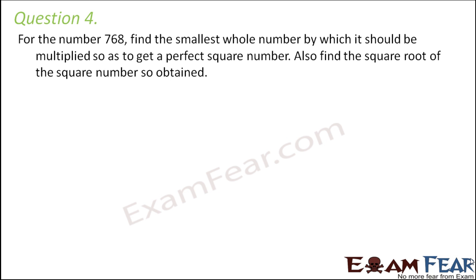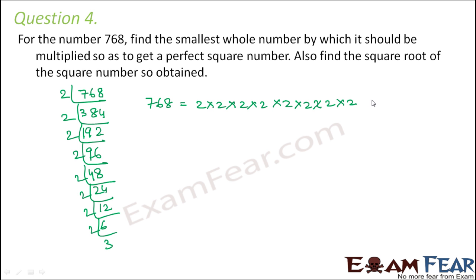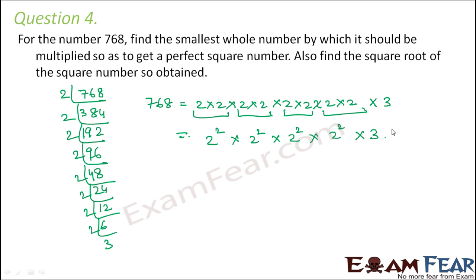Question number 4. For the number 768, find the smallest whole number by which it should be multiplied so as to get a perfect square number. Let us first factorize 768. Dividing repeatedly by 2: 768 equals 2 into 2 into 2 into 2 into 2 into 2 into 2 into 2, that is eight 2s, into 3. Arranging the 2s in pairs: this becomes 2 square into 2 square into 2 square into 2 square into 3. This 3 is the extra factor because of which 768 is not a perfect square.